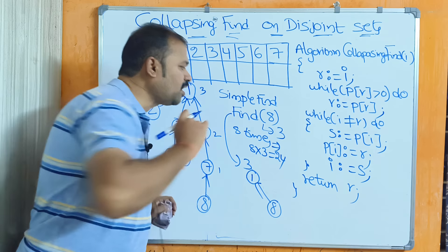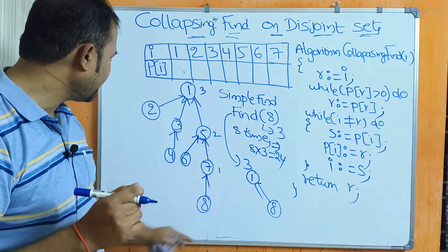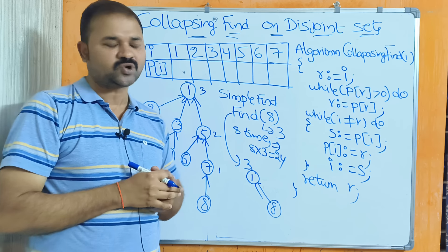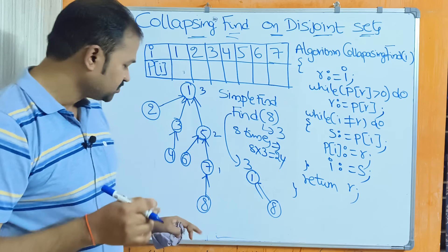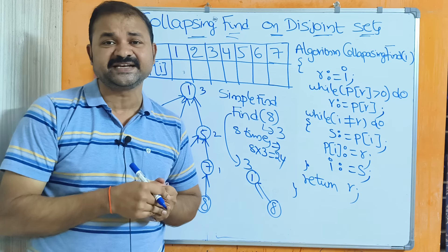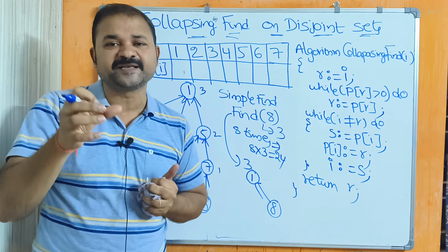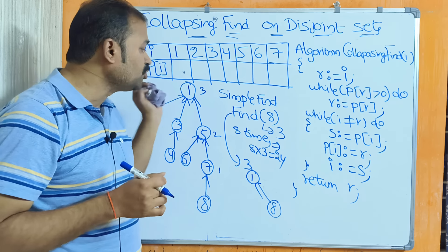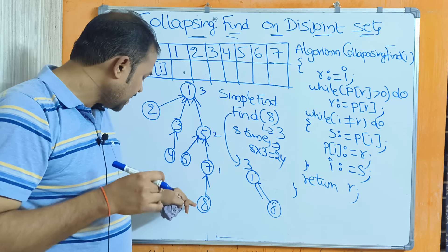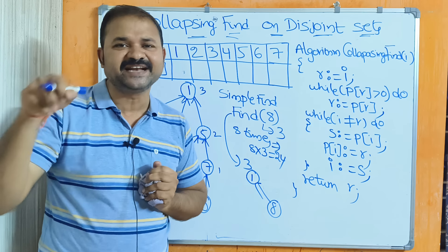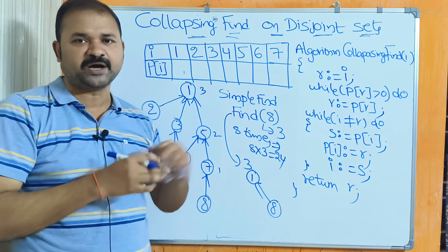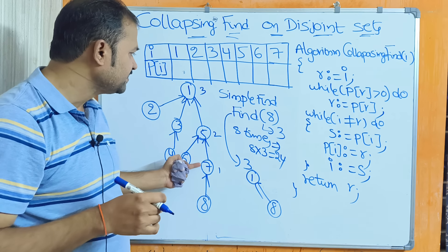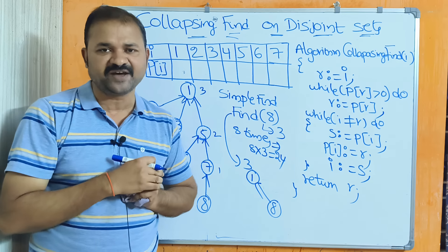Let's see what is the problem with the simple find operation. Here we want to find a node called 8 in the disjoint set. The find operation always returns the root node if the node is present in the disjoint set. Here 8 is present, so it will return the root node, which is 1. Node 8's parent is 7, which is greater than 0, so we require one comparison.